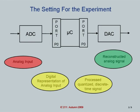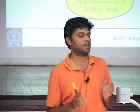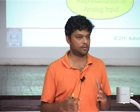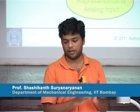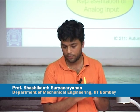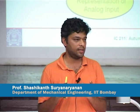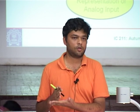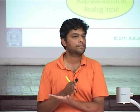The setting for the experiment is as follows: you will have an analog input that goes through an ADC. This analog input can come from any source — it doesn't matter what the source is; it can be a sensor or something that emulates a sensor. The rest of the circuitry doesn't care where the analog input is coming from. The analog input is processed by an ADC, so you get a digital representation, or a quantized representation, of the analog input.